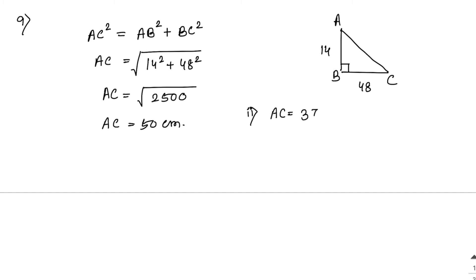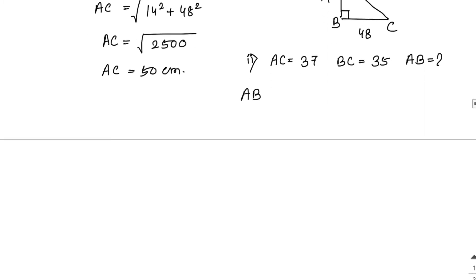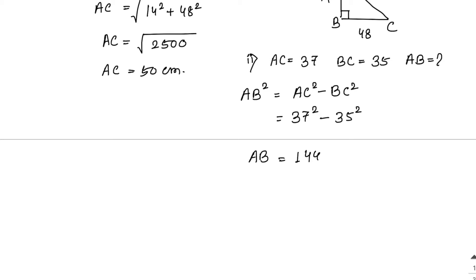For part 2 of sum number 9: AC equals 37 cm and BC equals 35 cm; find AB. Using Pythagoras: AB squared equals AC squared minus BC squared, so 37 squared minus 35 squared equals 1369 minus 1225 equals 144. Therefore AB equals the square root of 144, which is 12 cm.